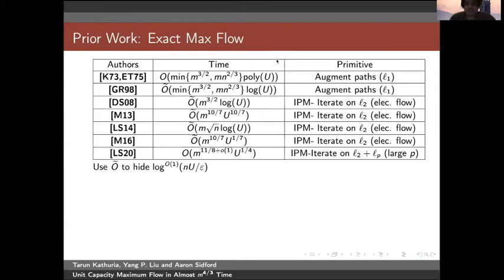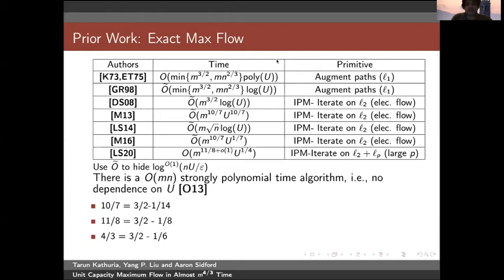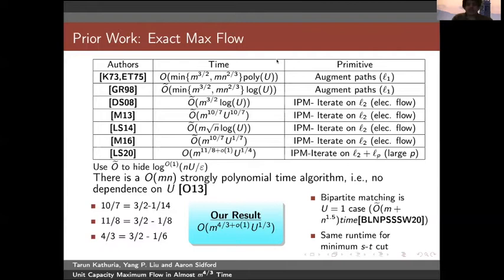Madry opened up the IPM framework and got m^(10/7) U^(10/7). Lee and Sidford considered different styles of IPMs and different barriers to get m sqrt(n) log U, still iterating electrical flows. Madry 16 improves dependence on U. Finally, Lee and Sidford get m^(11/8 + o(1)) U^(1/4) by iterating a mixed L2-Lp objective. Our result will be m^(4/3 + o(1)) U^(1/3), and in the special case U=1, bipartite matching is captured. We also get the same runtime for min s-t cut.